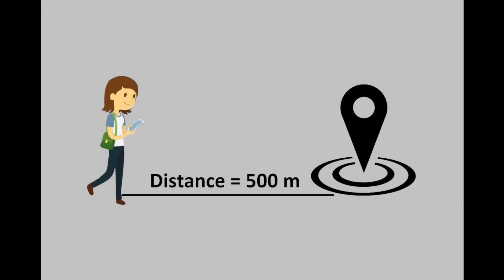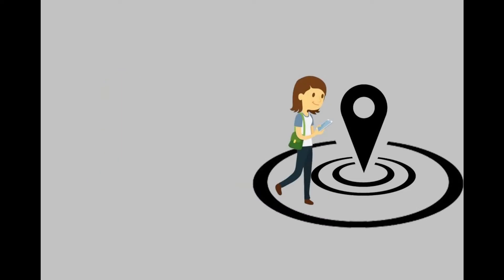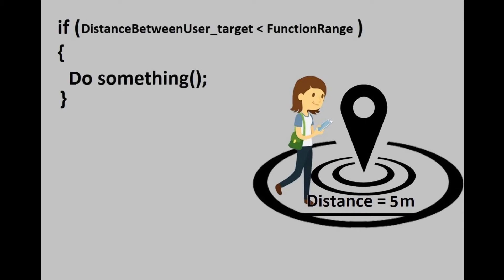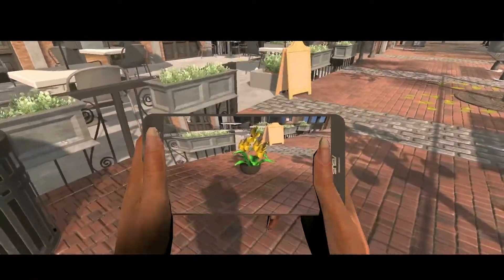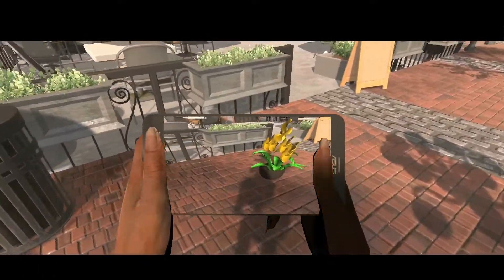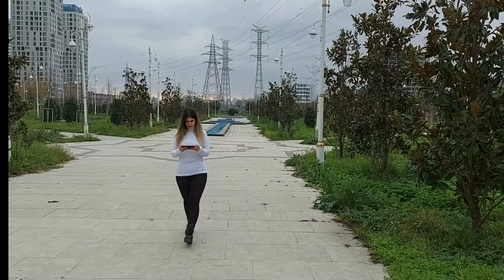The appropriate solution is to use a comparison of the distance between the phone and the target. This means that our function will be executed when the phone reaches a distance of 5 meters from the target coordinates. With this system, the current location of the phone doesn't need to be exact, so if there is any fluctuation, the system will not be damaged.